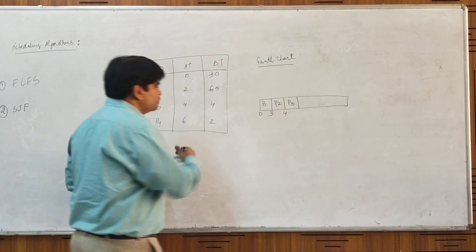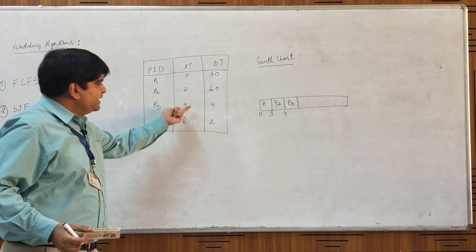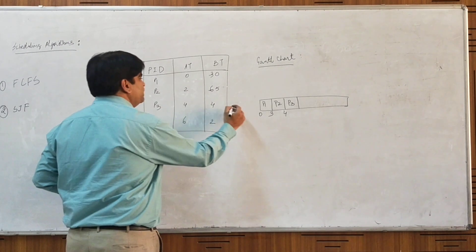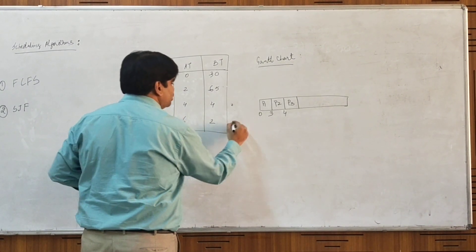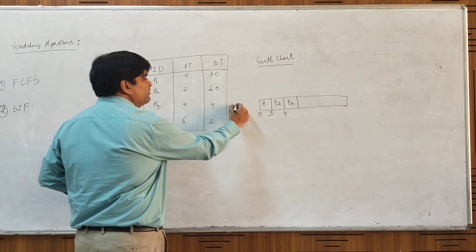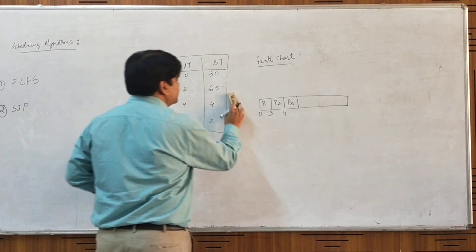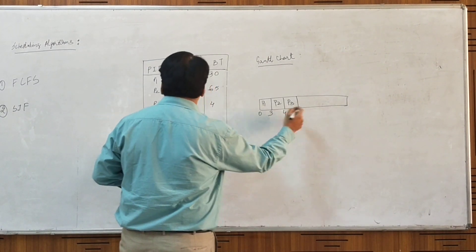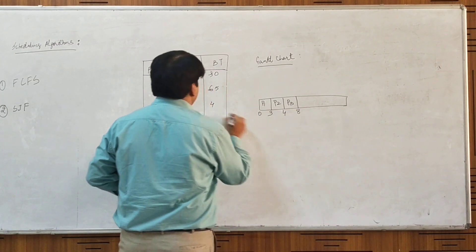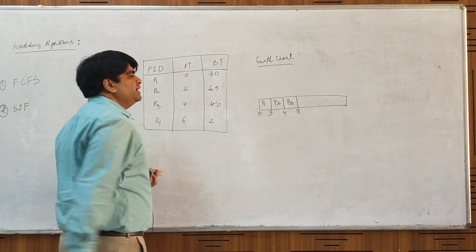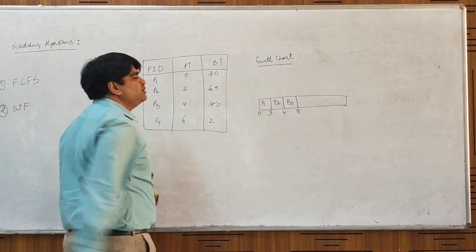The next process to arrive and make a request is at t=6. At t=6, the remaining burst time of P3 will be 2 seconds, and the remaining burst time of the newly arrived P4 is also 2 seconds. We continue with P3 because it arrived first. We continue with P3 until its completion. Starting at t=4 with a burst time of 4 seconds, P3 completes at t=8.